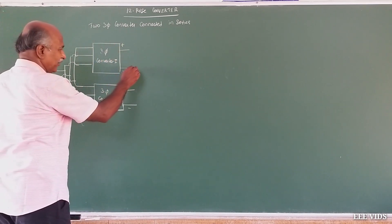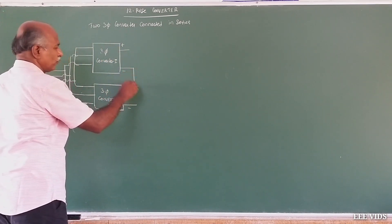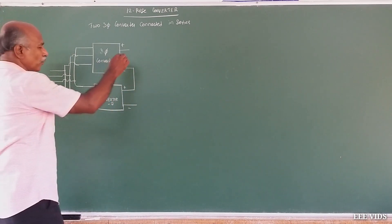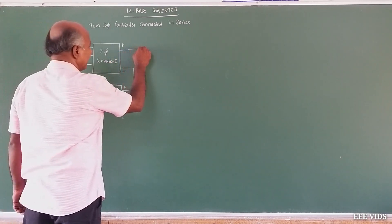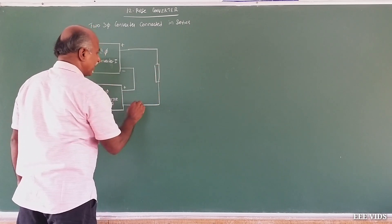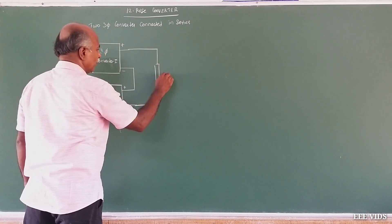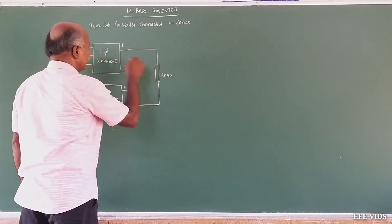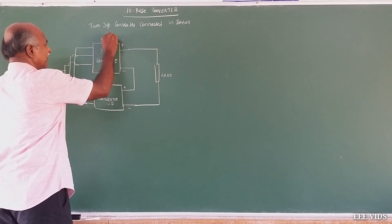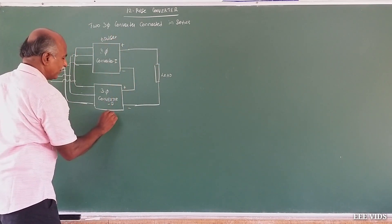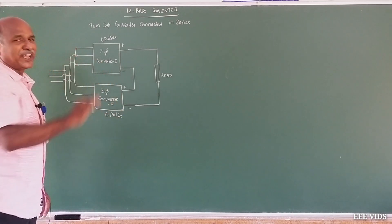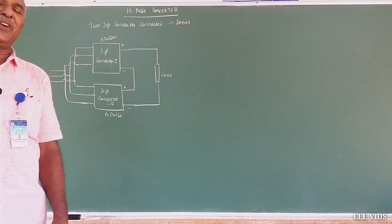The outputs are connected in series — plus to minus — and the load is connected there. Converter 1 gives 6 pulses, Converter 2 gives 6 pulses; connected in series, the total pulse count is 12. This is the 12-Pulse Converter.